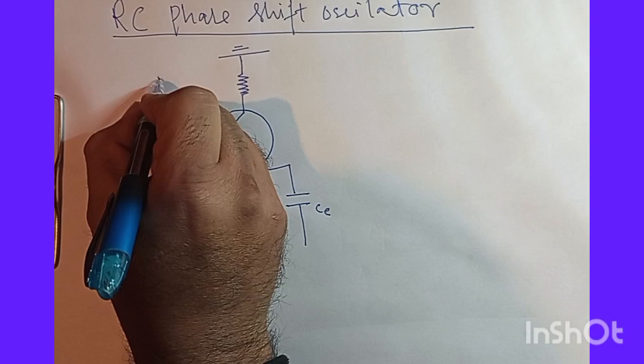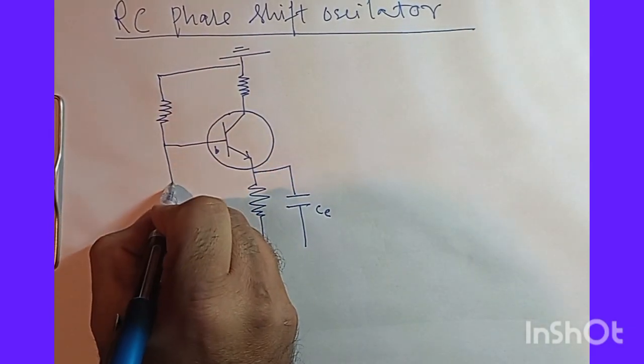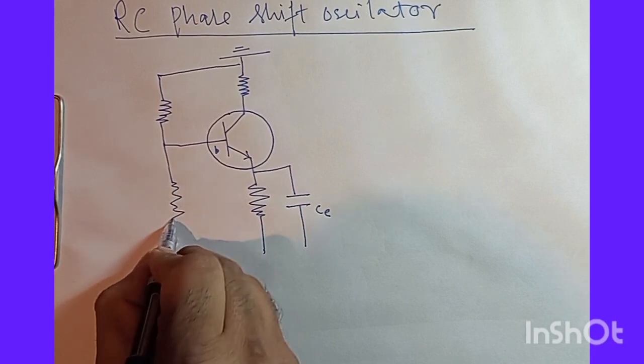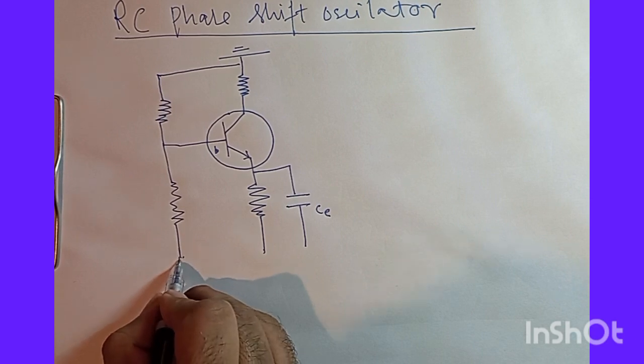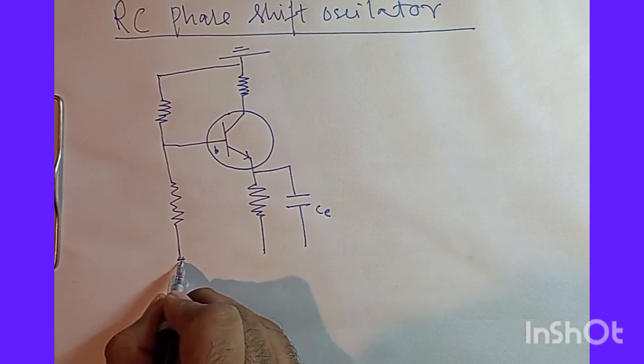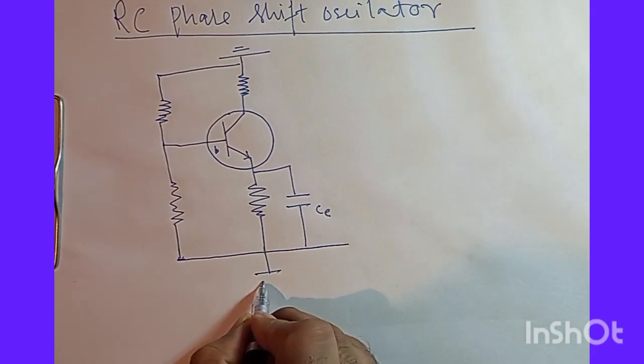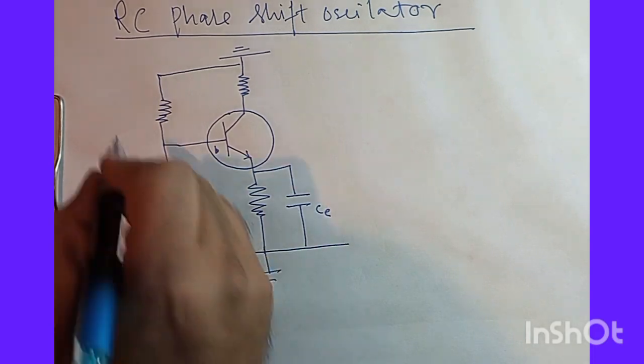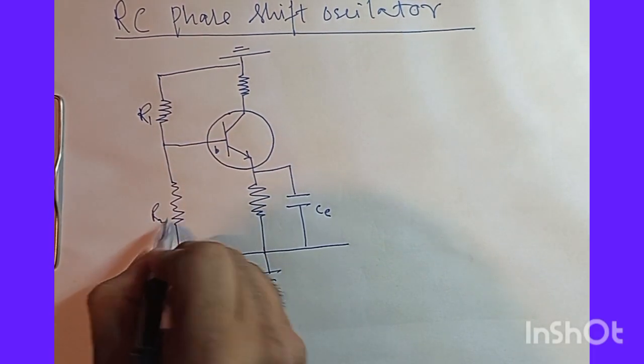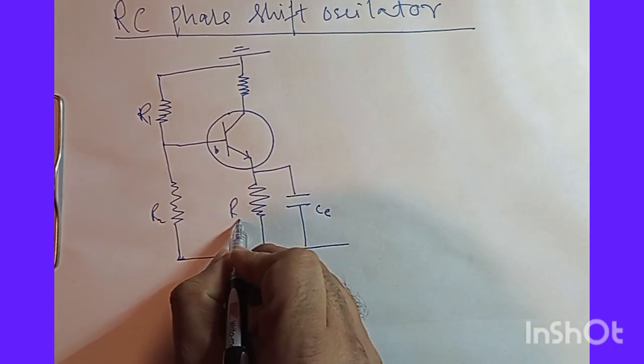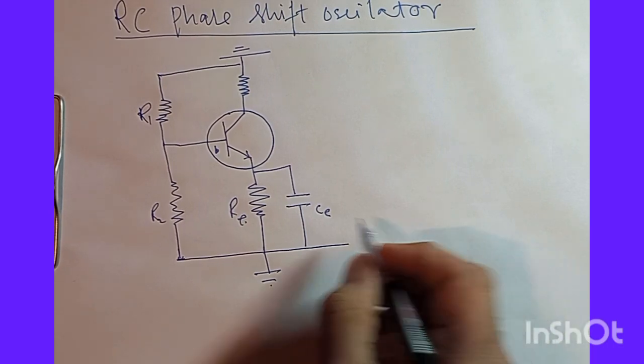Let's have a voltage divider here. So this is our amplifier, and let's assume that this is our one, this is our two, and this is emitter resistance RE.